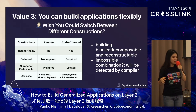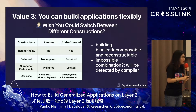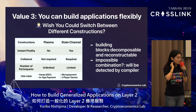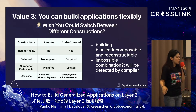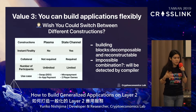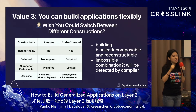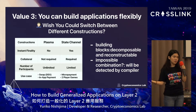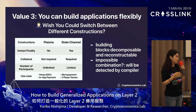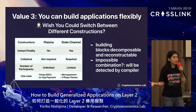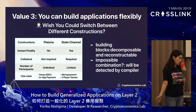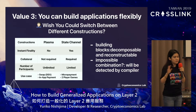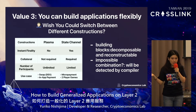The third value we want to create in our framework is you can build applications flexibly. Application developers will be able to build their applications with decomposable building blocks, and then reuse them for different constructions. This decomposition and reconstruction plays a massive role in the abstraction of layer two. For example, Plasma and state channels can be built with the exact same building blocks. Impossible combinations of building blocks will be automatically detected by the compiler, so you'll know beforehand that it won't work as an application.